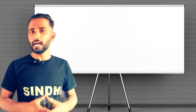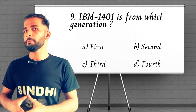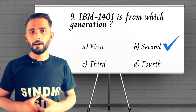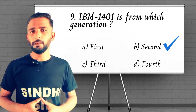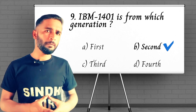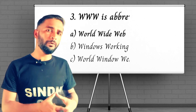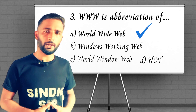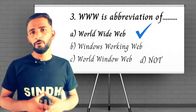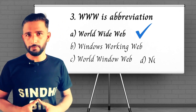Question: IBM 1401 is from which generation? Answer is option B, second generation. Last question: WWW is the abbreviation of — answer is option A, World Wide Web.